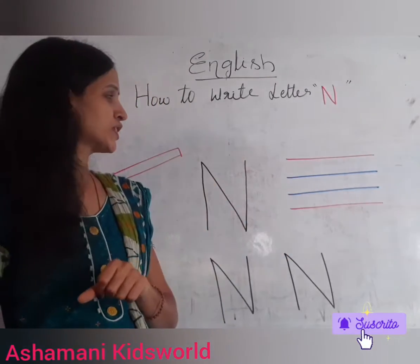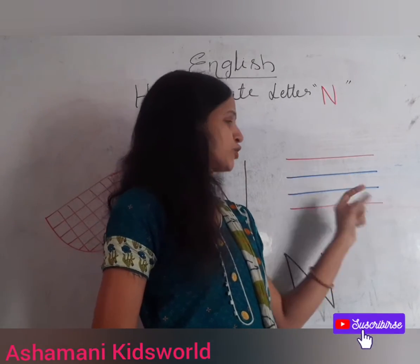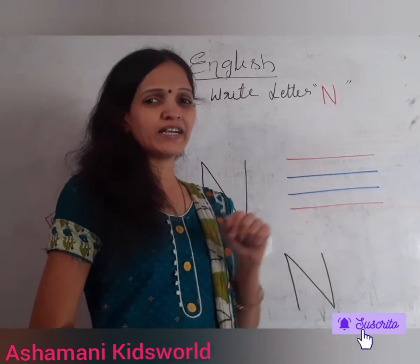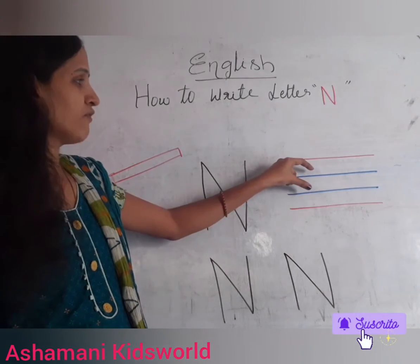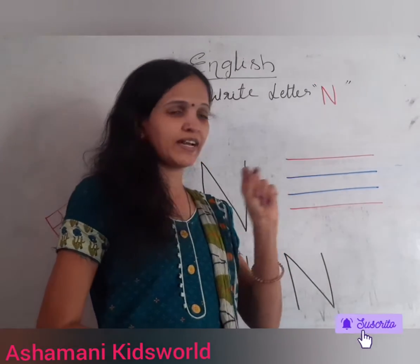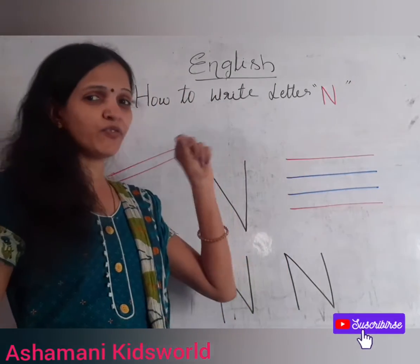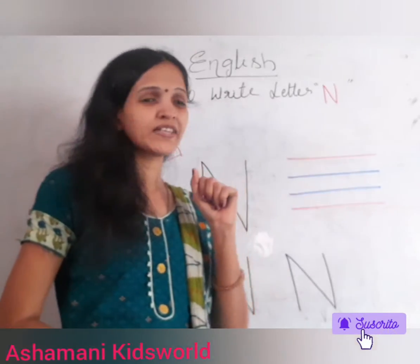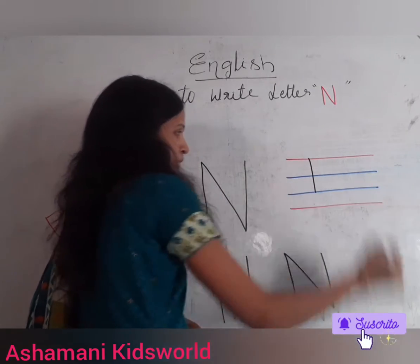Coming to 4-rule notebook, children. Here we are having 2 red lines and 2 blue lines. This is the top red line and this is the bottom red line. In between, we are having 2 blue lines. So this is the 1st blue line and this is the 2nd blue line. So now in the line format, how will you write letter capital N?